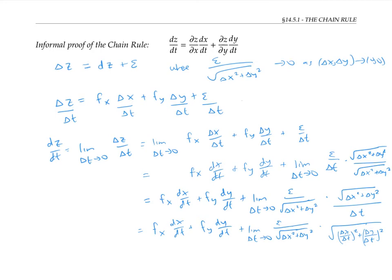As delta t goes to zero, this expression is going to zero by the assumption that f is differentiable. And this expression is just going to the square root of dx/dt squared plus dy/dt squared.